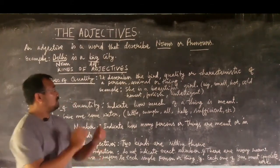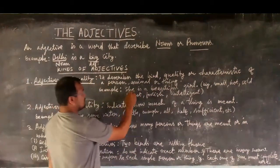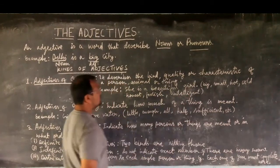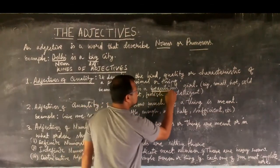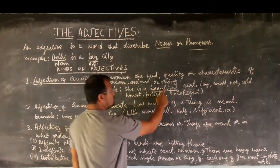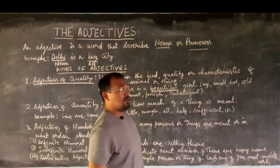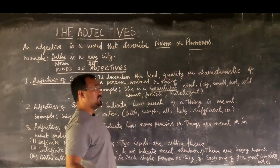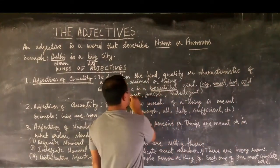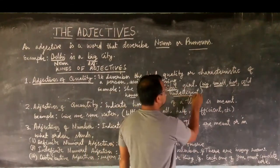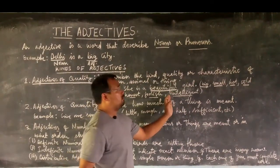For example, 'She is a beautiful girl.' Here, which word is the adjective of quality? The word 'beautiful' is the adjective of quality. Some other examples of adjective of quality words are: big, small, hot, cold, honest, foolish, and intelligent. There are many more such words; these are just a few examples.